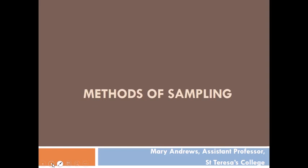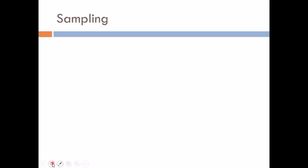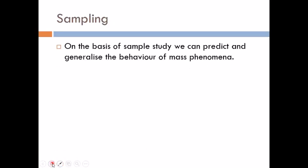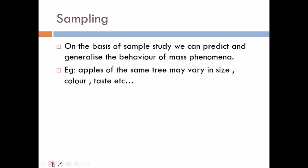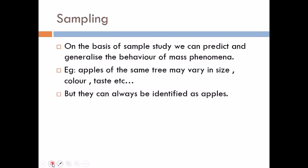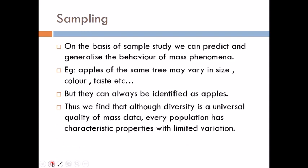About the methods of sampling: on the basis of a sample study we can predict and generalize the behavior of mass phenomena. This is possible because there is no statistical population whose elements would vary from each other without limit. For example, apples of the same tree may vary in size, color, taste, and weight, but they can always be identified as apples.